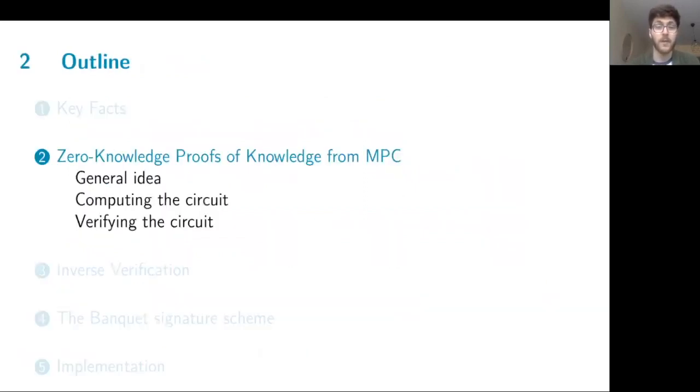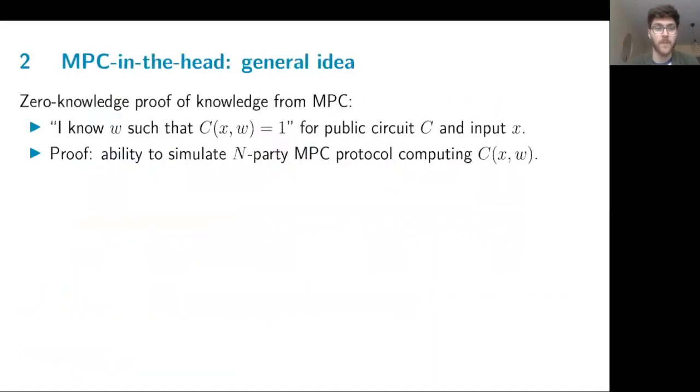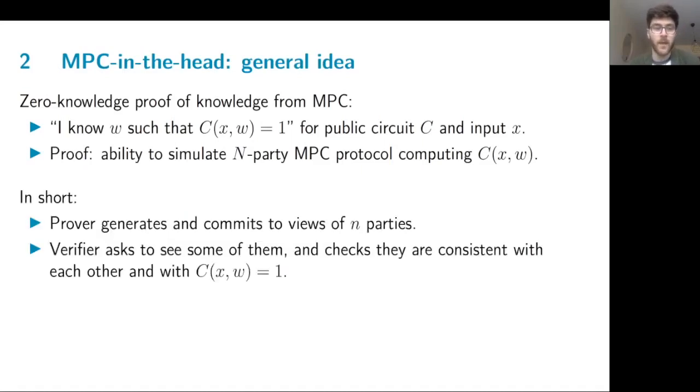Now I will first describe the general idea behind the proof of knowledge framework. To build a zero-knowledge proof of knowledge from MPC, we are aiming to prove claims that we know a witness such that a circuit evaluated on a public statement and this witness will output one. And the proof for this claim is the ability to simulate an N-party MPC protocol which computes this circuit. In a simplified way, we can say that the prover generates and commits to the view of these N parties and the verifier will then ask to see some of them and check that they are consistent, so that each message sent by one party to another was indeed received correctly and without modification. And it will also check that the circuit outputs the correct value.